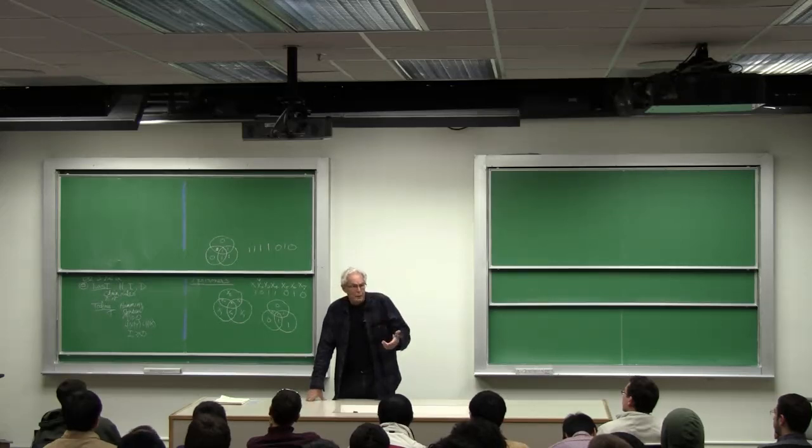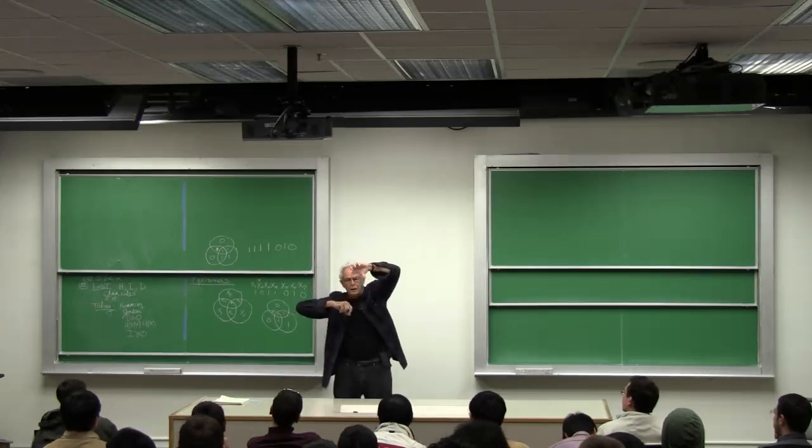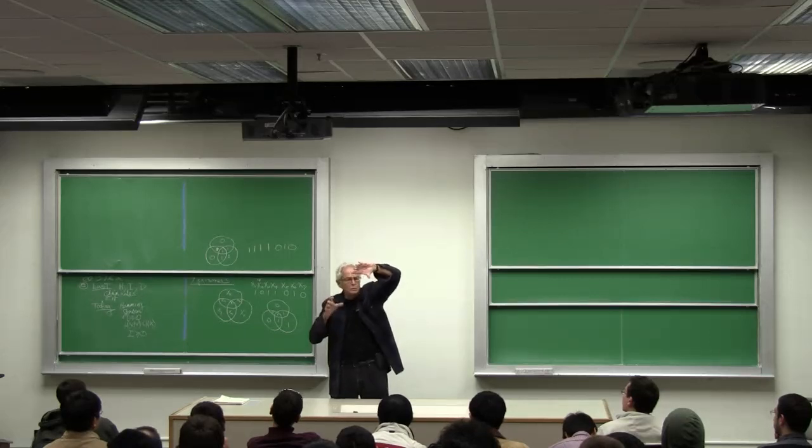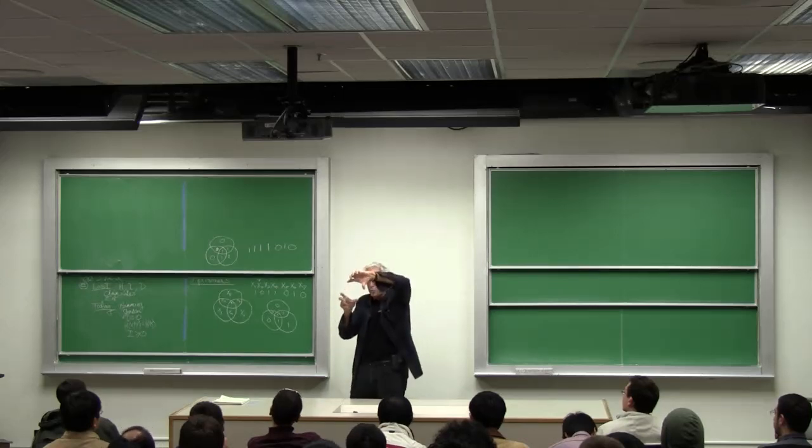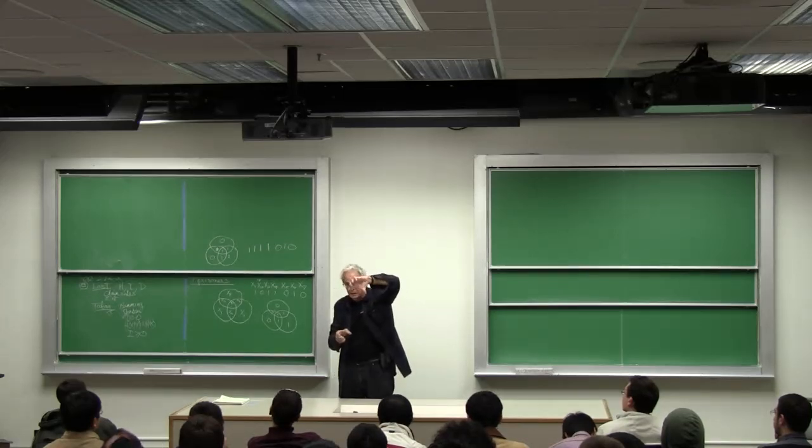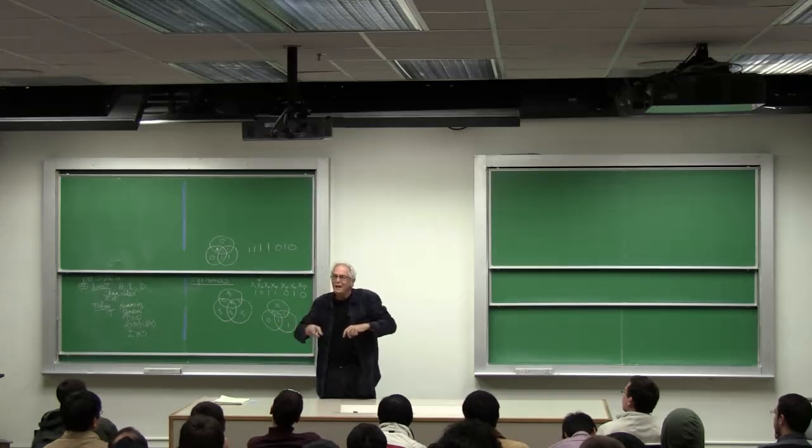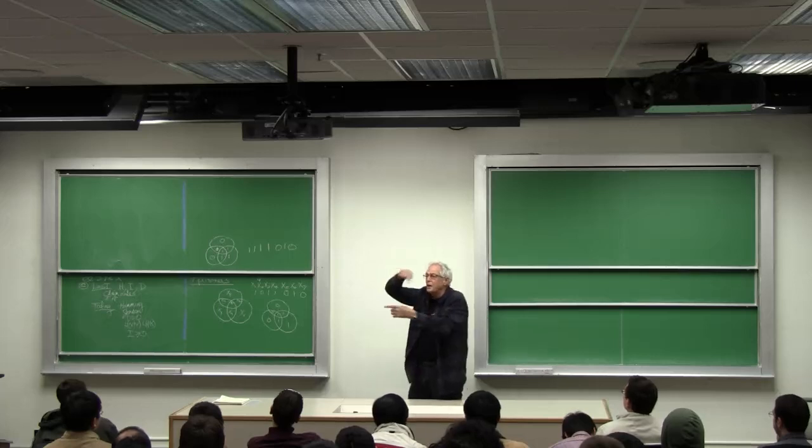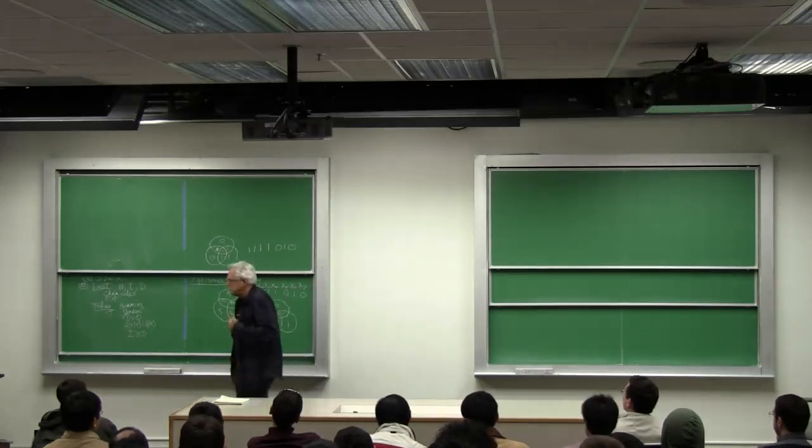They make an error with probability p. So you say, hmm, here's a little module that is wrong with probability p. So the way to make a reliable computer is to put three of these modules together and then take a majority vote. But now each of them can be wrong with probability p, and the wires to the majority vote can be wrong, and so on.